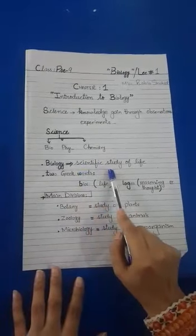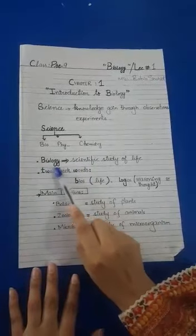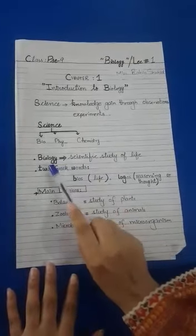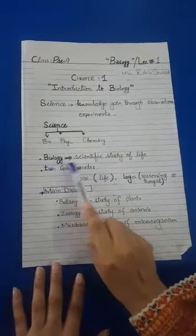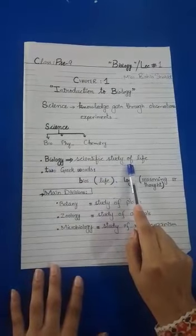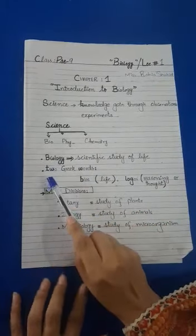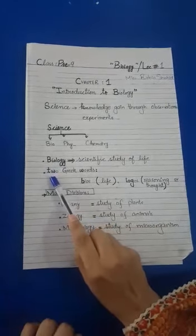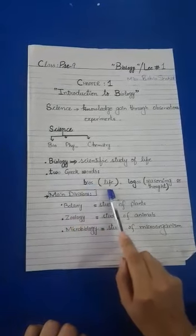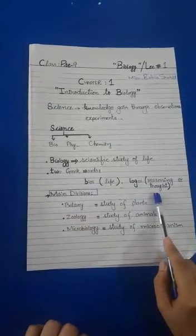What is biology? The scientific study of life is known as biology — when you study living things, that study is known as biology. Biology has been derived from two Greek words: bios, meaning life, and logos, meaning reasoning and thought.